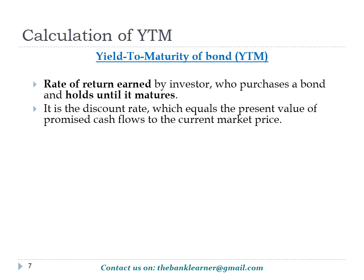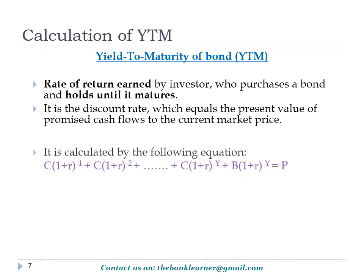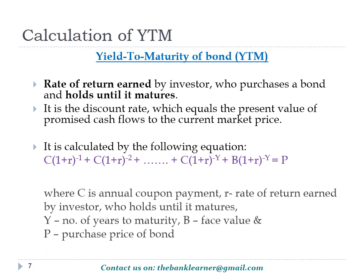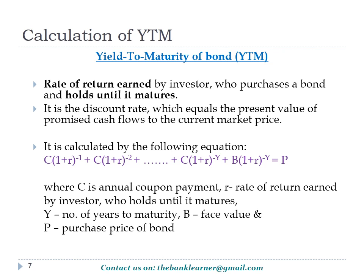Yield to maturity is often known as book yield or redemption yield. The important equation representing bond value is: C/(1+r) + C/(1+r)² + ... + C/(1+r)^y + B/(1+r)^y = P, where C is the annual coupon payment, r is the yield to maturity (rate of return earned when the bond matures), y is the number of years to maturity, B is the face value, and P is the market purchase price of the bond.